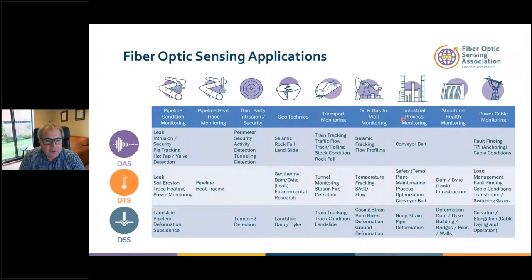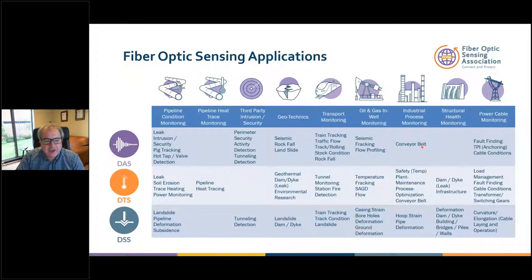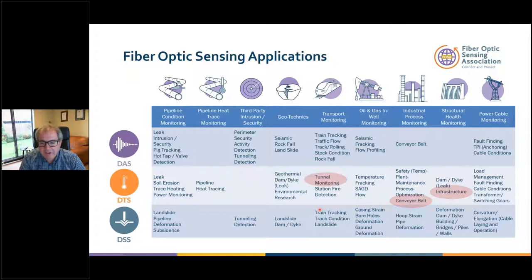Onto the applications. I've taken those nine blocks and mapped the technologies alongside to see which can do which things within each block — and there's a huge diversity of applications, from conveyor belt monitoring to heat tracing in pipelines to landslides, deformation, and dams. The first section of applications is fire detection, mainly around DTS products. I'll be talking in particular about tunnels, conveyor belts, and infrastructure.